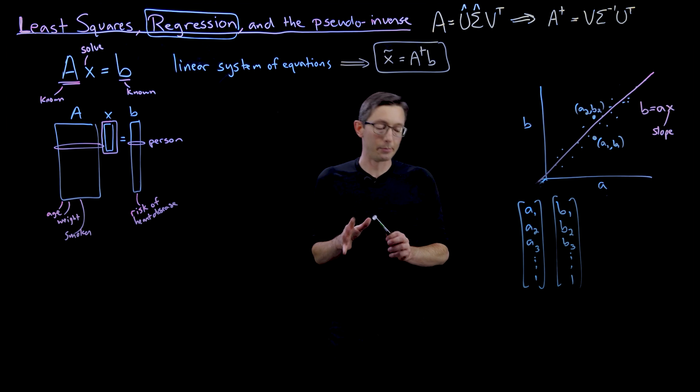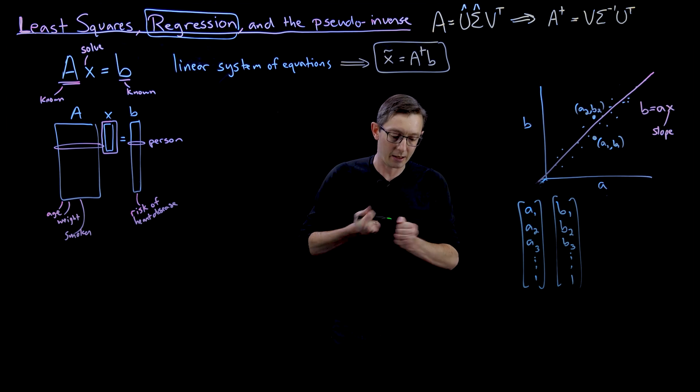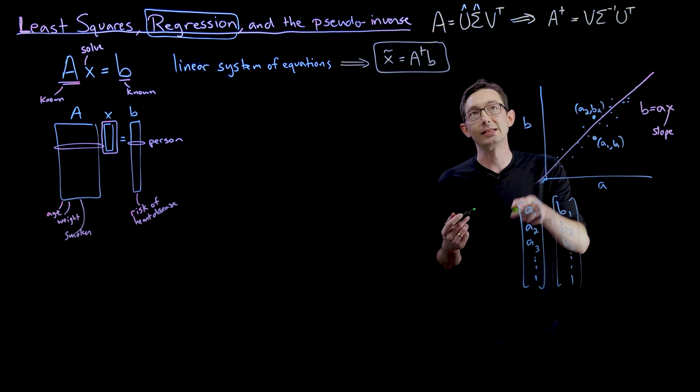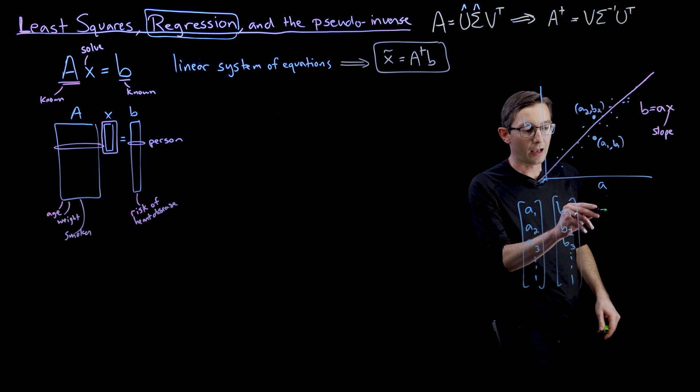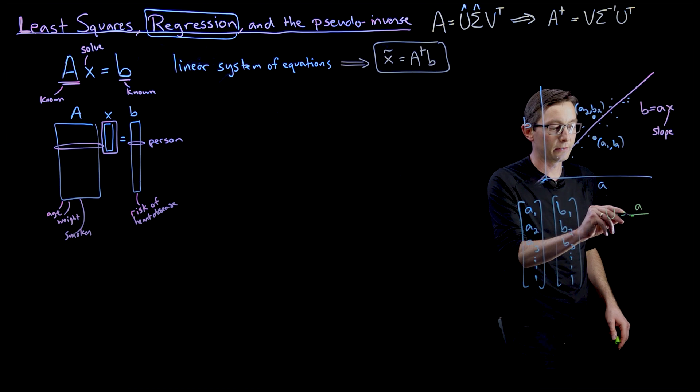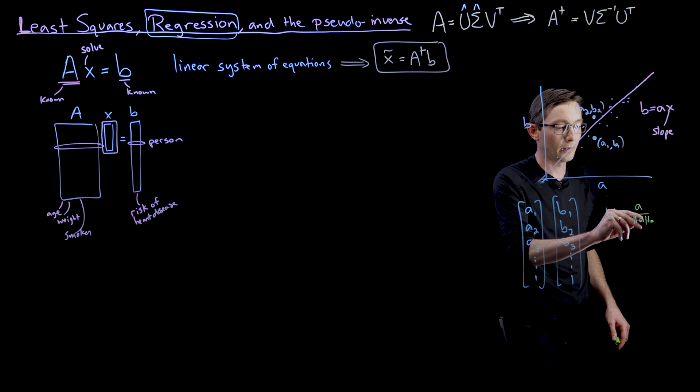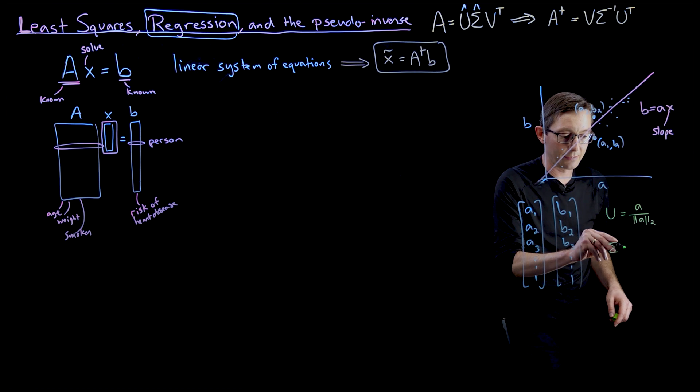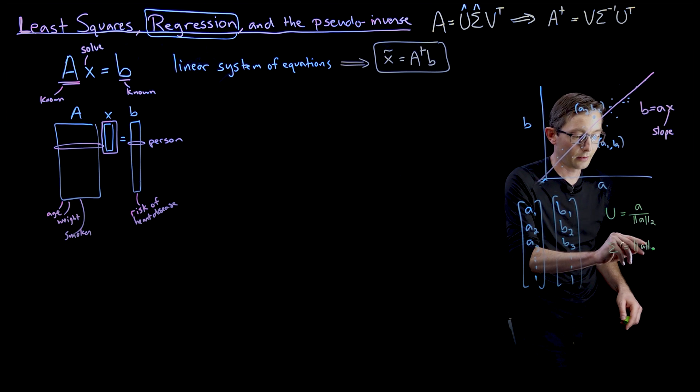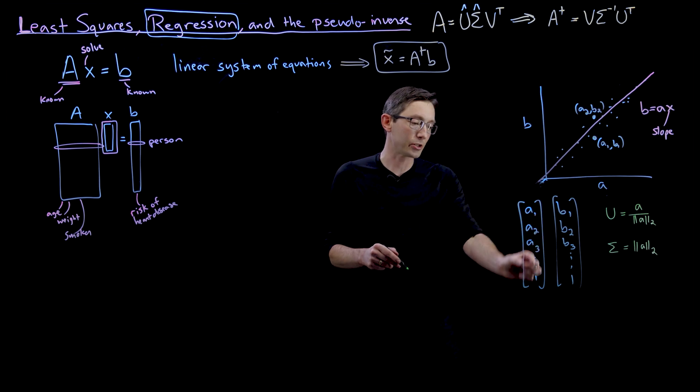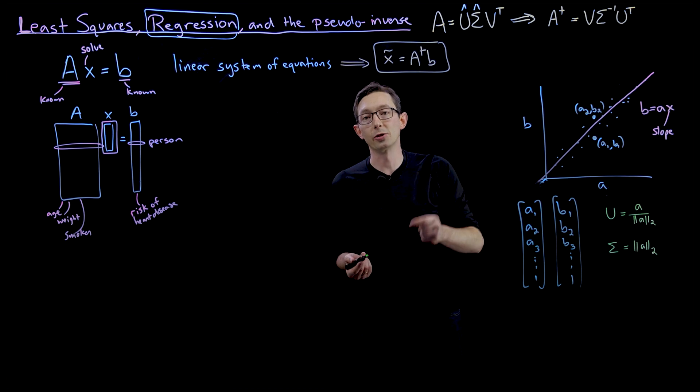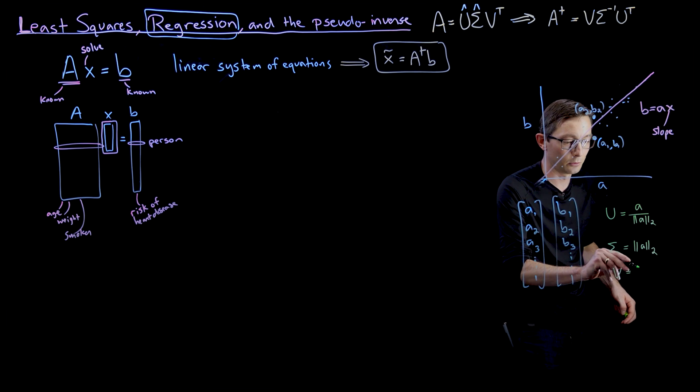And so in one dimensions, this is quite simple. Essentially, in one dimension, what we have, if I just compute the SVD of this A matrix, because that's how I'm going to pseudo inverse, I'm going to get U equals my A vector divided by its norm, A divided by its norm. I'm going to have sigma equals just the norm of A. And because this is a one dimensional matrix, it has just one column, the V matrix is going to be trivial. It's just going to be one. So V is going to equal one.